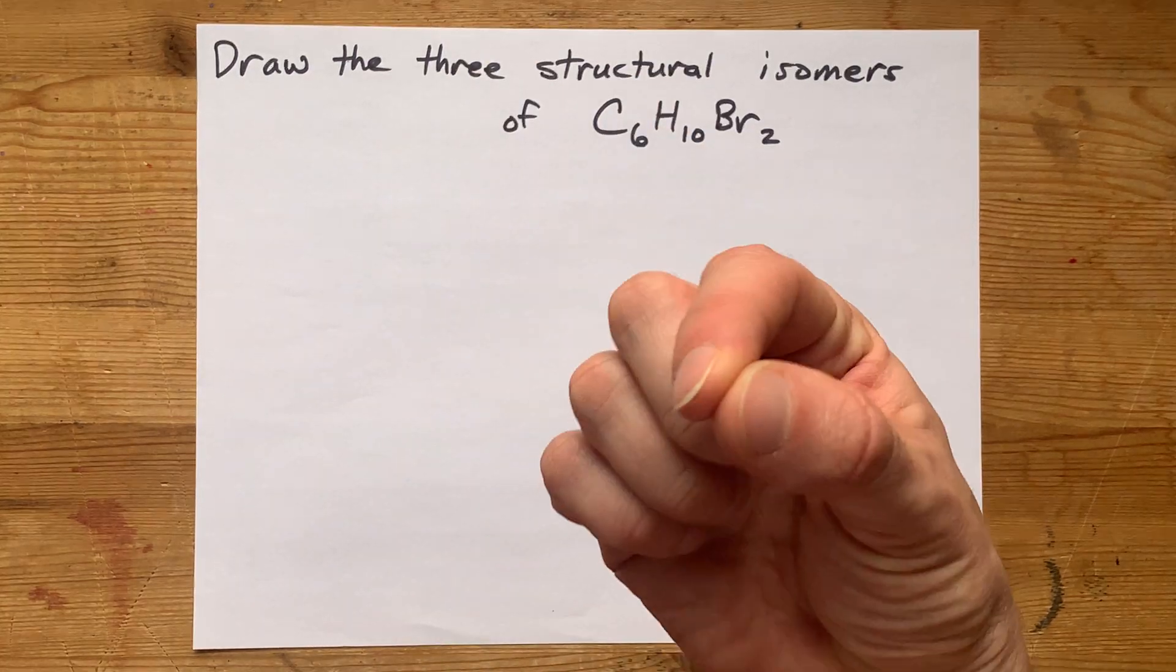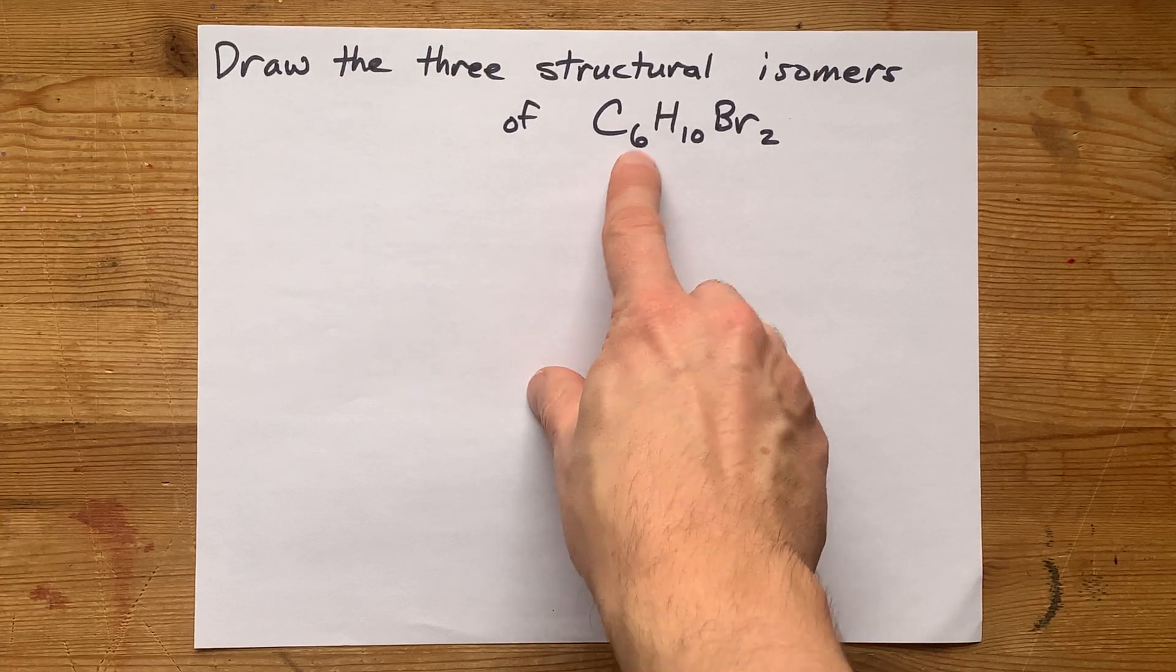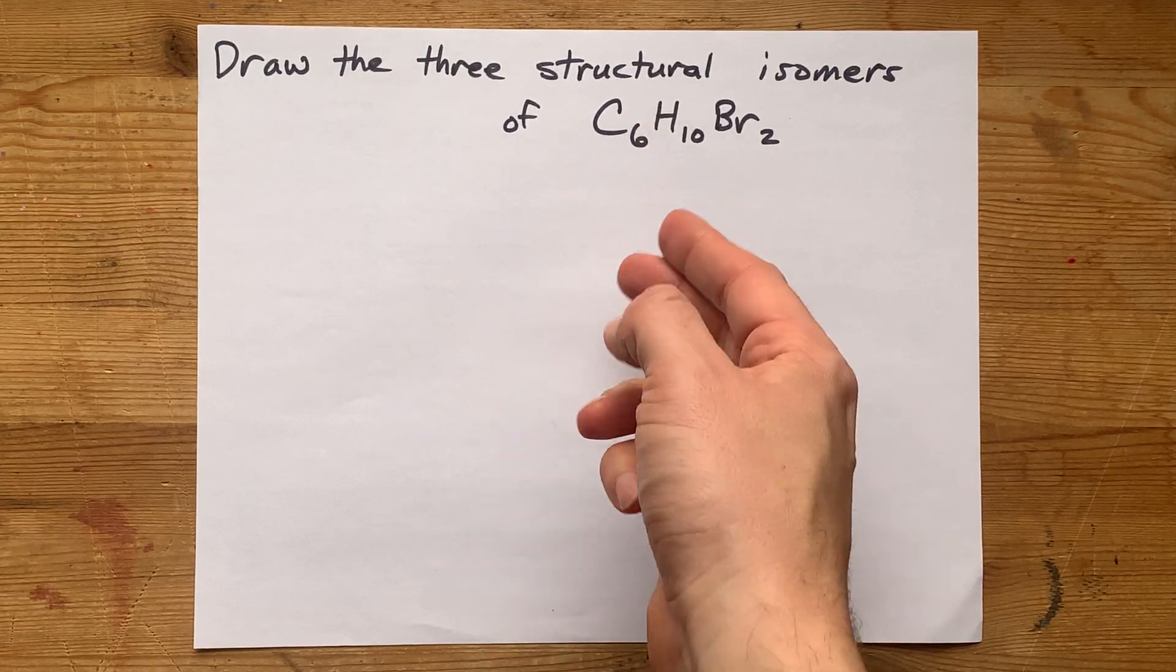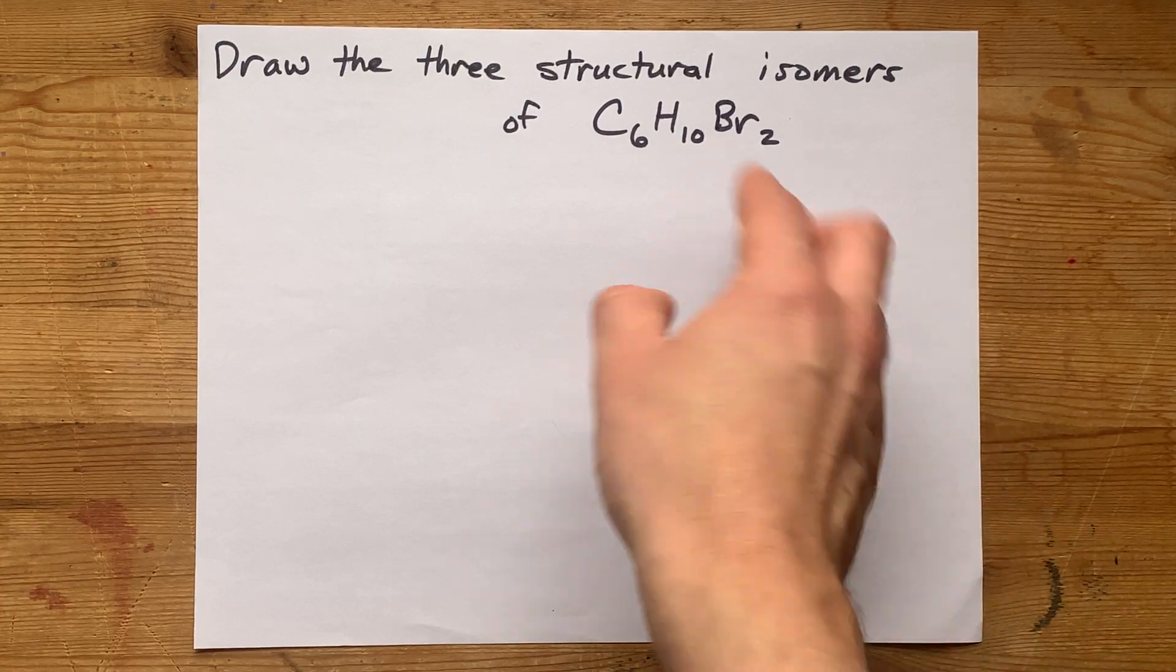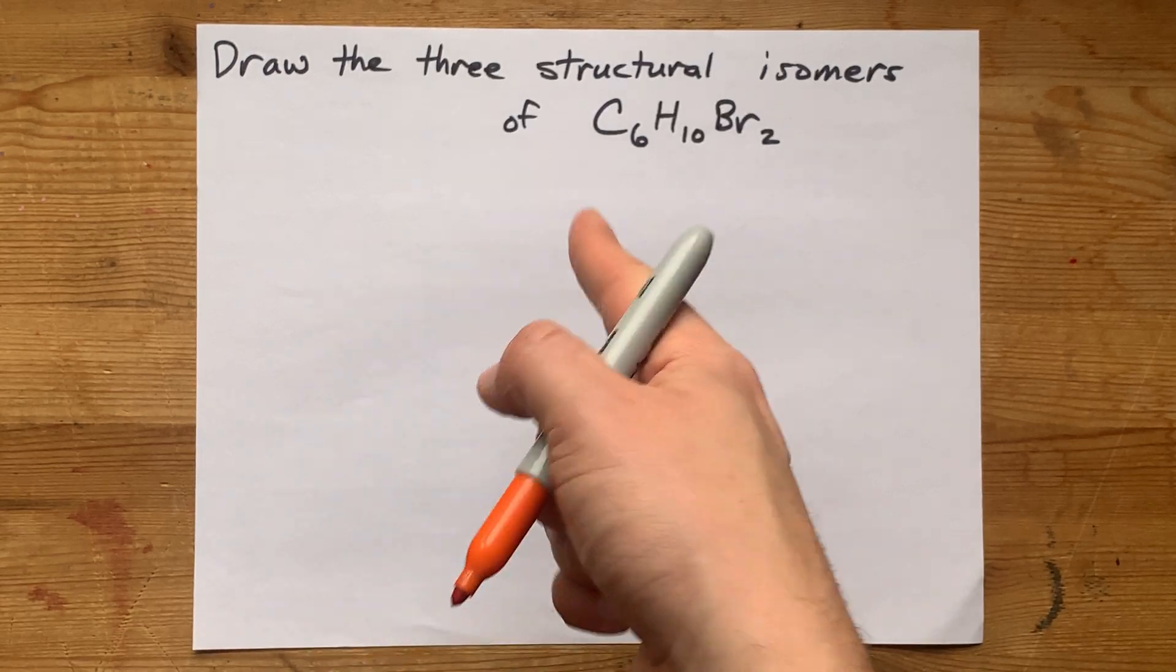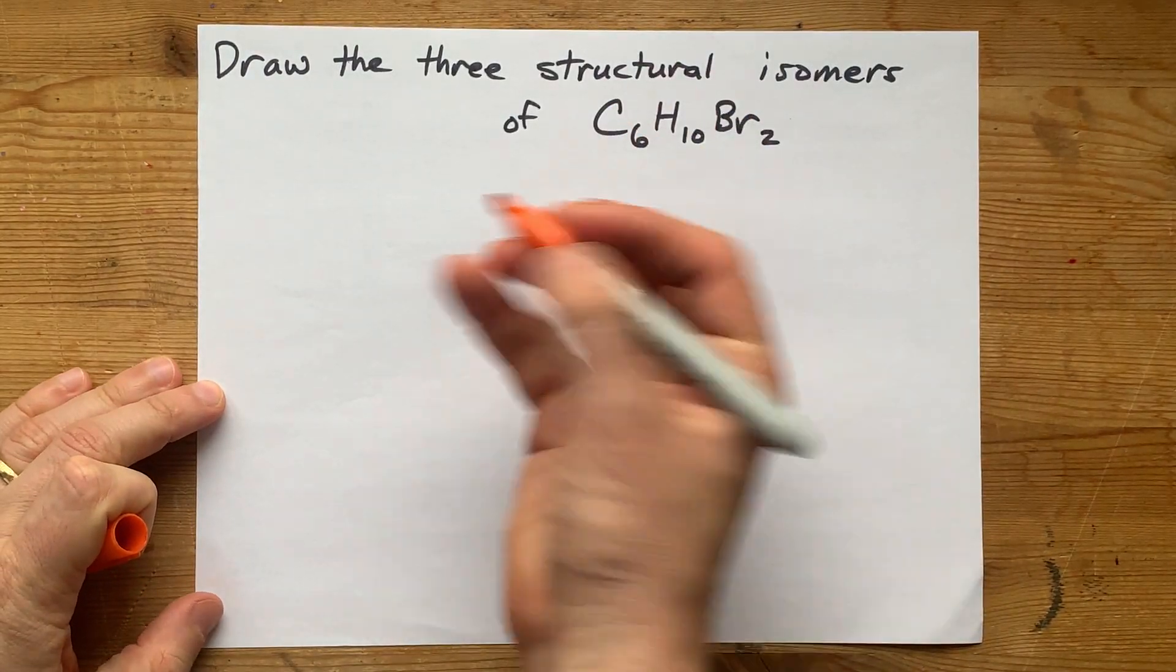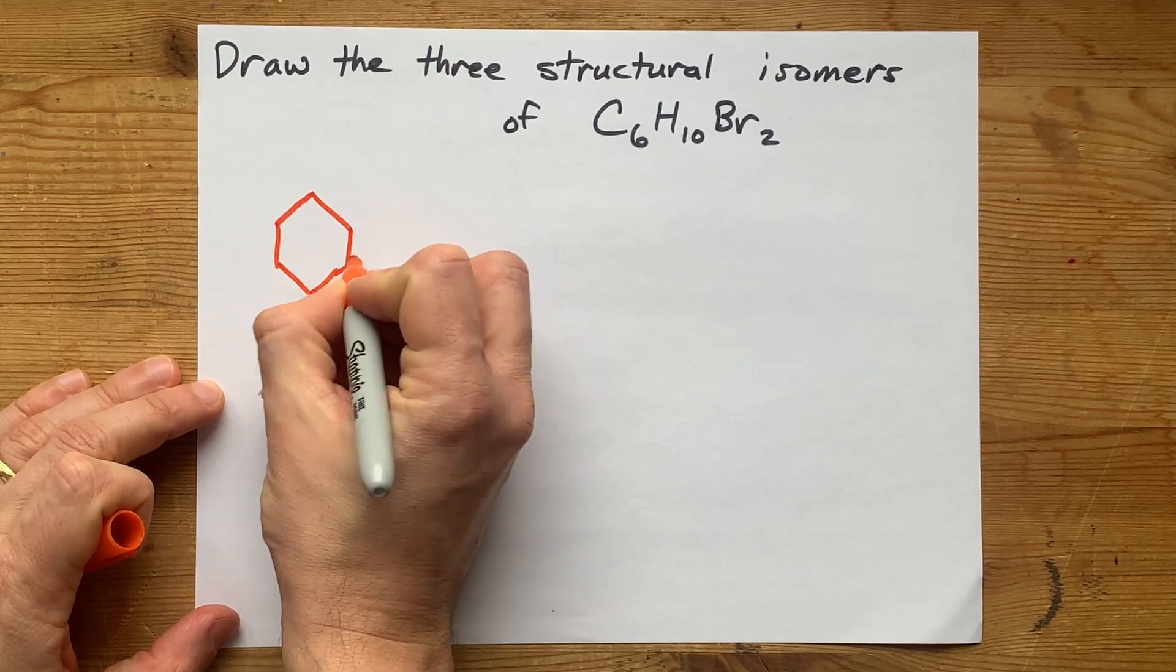I believe what the teacher is trying to get at is that this is similar to C6H12. That's if both of these bromines were hydrogens, this would have been C6H12. And that's the commonly written form for cyclohexane, which is six carbons in a ring.